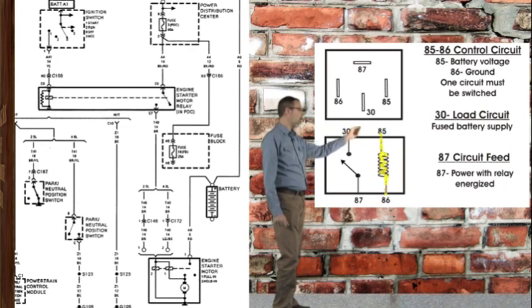Either the voltage supply or the ground side will be initiated by an outside control. Pin 30 is the high ampere supply voltage, and pin 87 carries that voltage to the component, such as the fuel pump, headlights, and in this case, the starter solenoid.